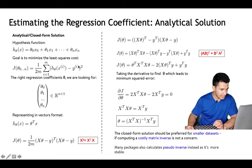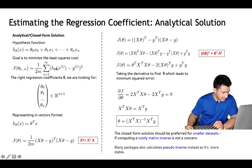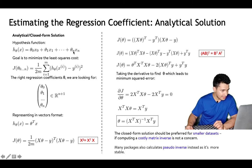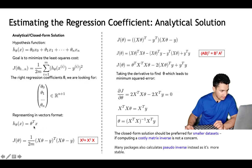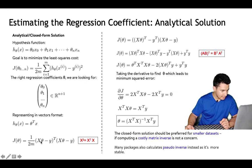We represent the hypothesis in vector format: θ₀x₀ + θ₁x₁ can be written as θᵀx, where θ contains all θ values and x contains all x₁ through xₙ. Similarly, the loss function can be written as (Xθ − y)ᵀ(Xθ − y), because in matrix multiplication x² can be written as xᵀx.